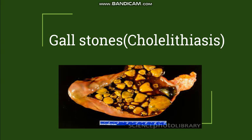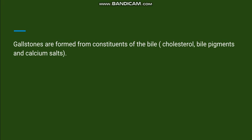Hello everyone. In this video we will discuss about gallstones. Gallstones are formed from the constituents of the bile, so they can be either composed of cholesterol, bile pigments, or they can be mixed stones. We will discuss cholesterol stones first — the pathogenesis and morphology — and then we will go to the bile pigment stones.